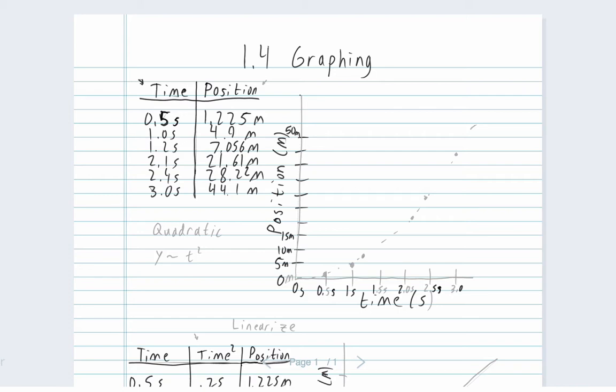The example is for a ball falling from a building and we look at the time and how far it's fallen in that given time. So we got the time right here and the position right there. We have time on the x-axis in our graph and position on the y-axis.